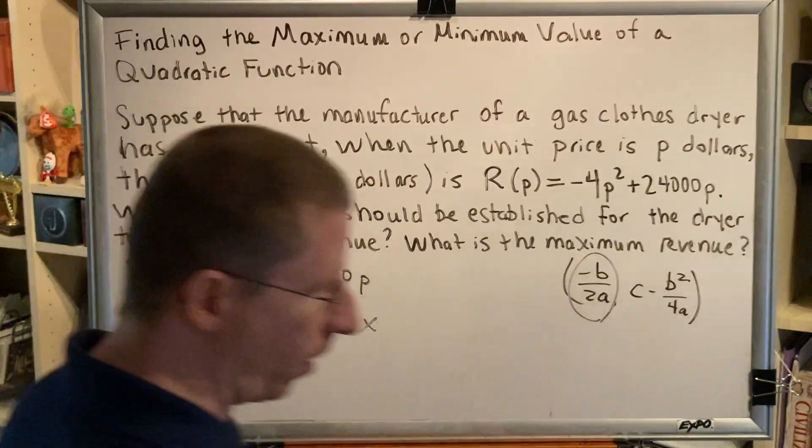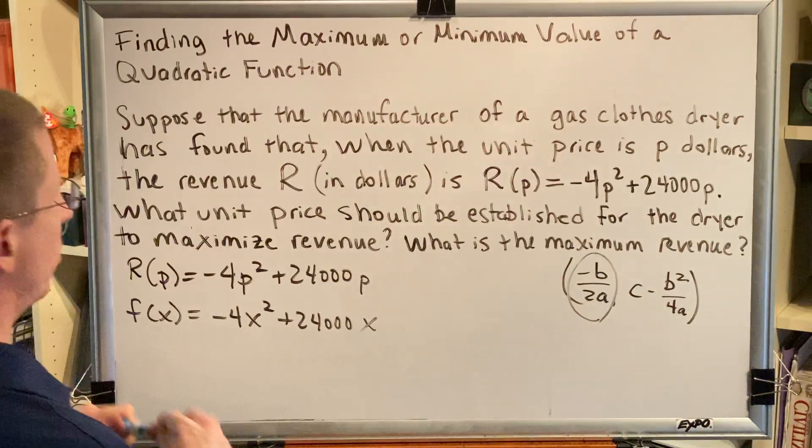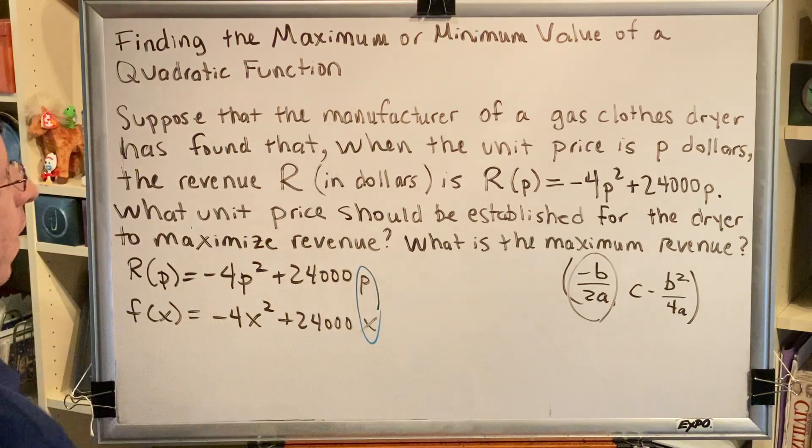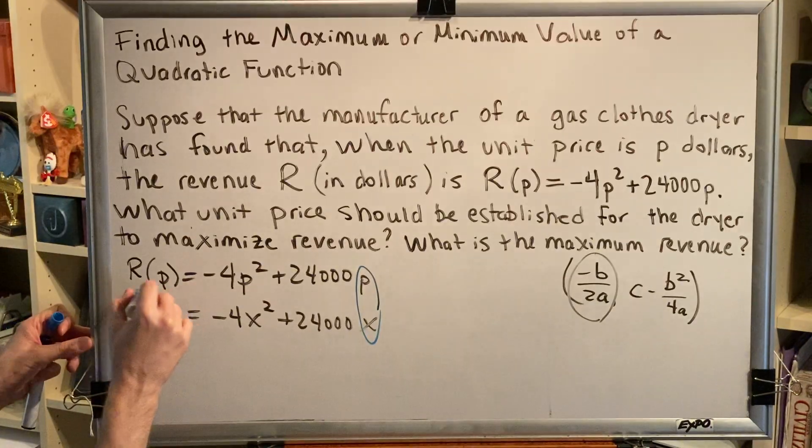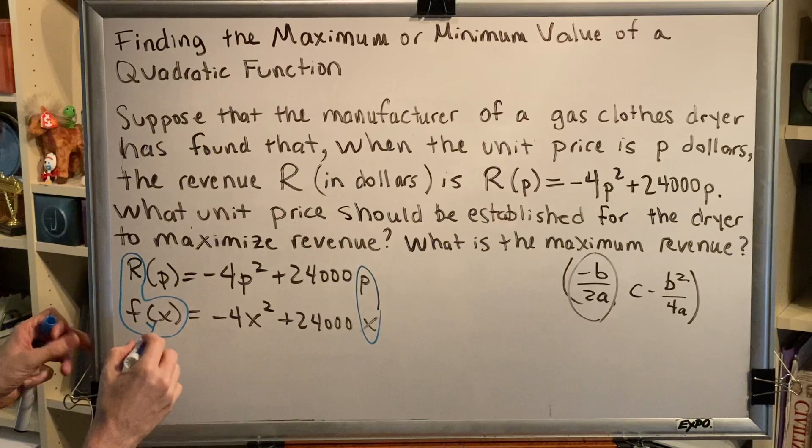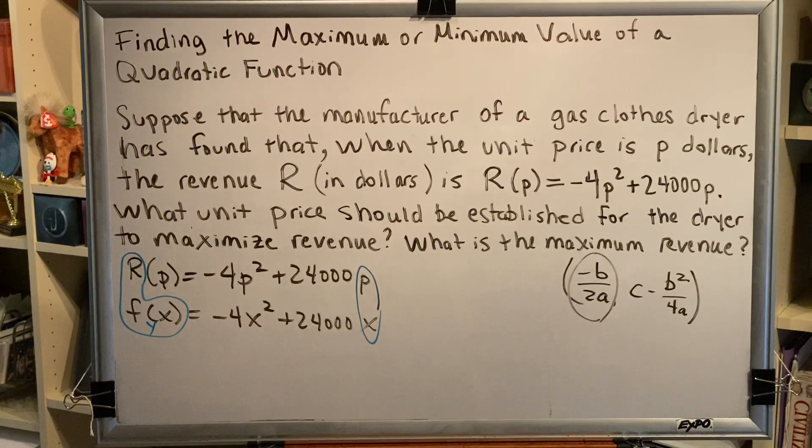By doing this, we actually gain some very valuable information, which is that x and p are the same variable for this problem. And r and f of x, which we know is the same thing as y, are the same variable for this problem.